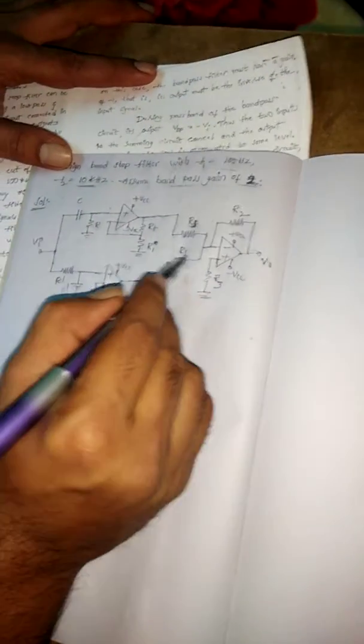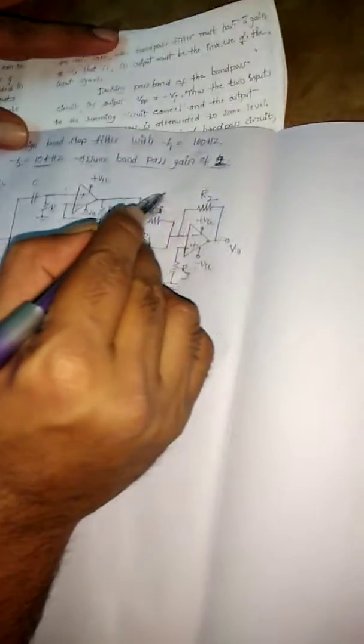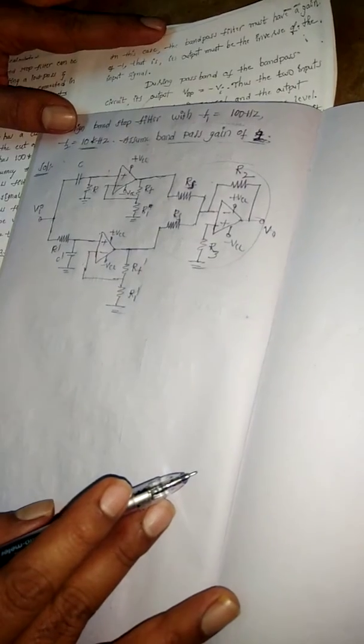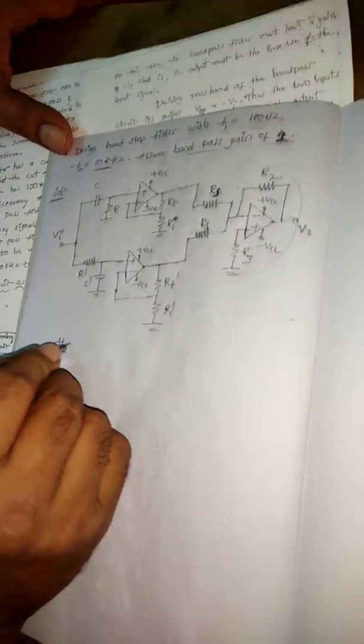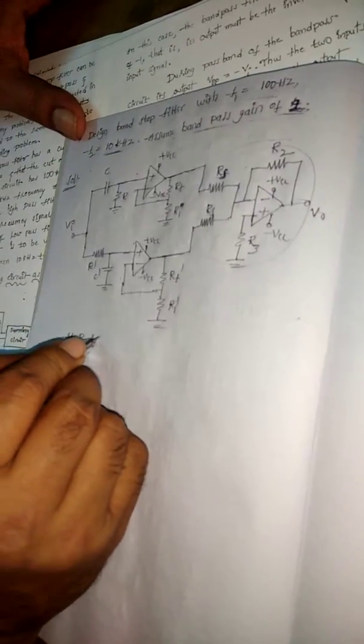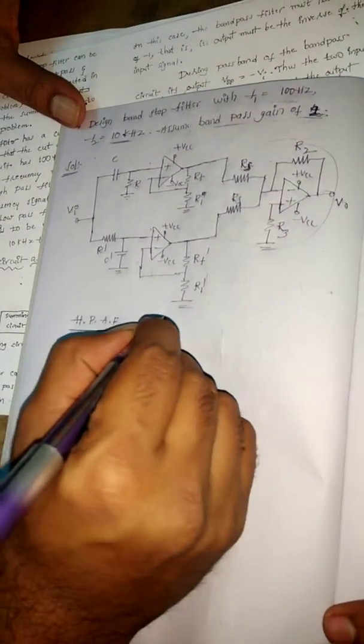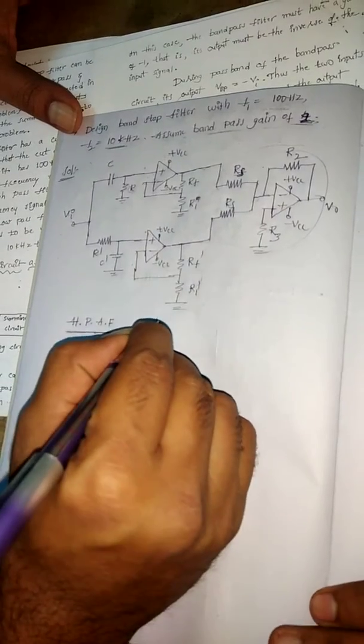The output of both filters needs to be connected to a summing circuit. Here I'm taking the summing circuit in inverting configuration. Now for the design, we first go with the high-pass active filter. When designing the high-pass active filter, selecting the correct cutoff frequency is very important. For the band-stop filter high-pass filter, we need to select the higher cutoff frequency.